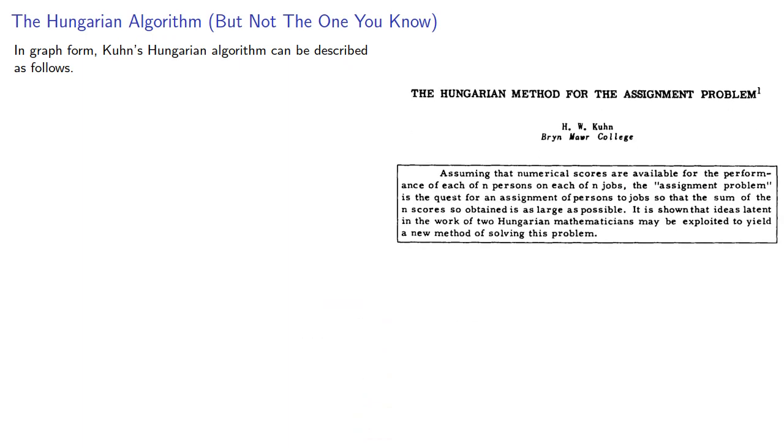In graph form, Kuhn's Hungarian algorithm can be described as follows. We take a complete, weighted, bipartite graph with partite sets x and y.